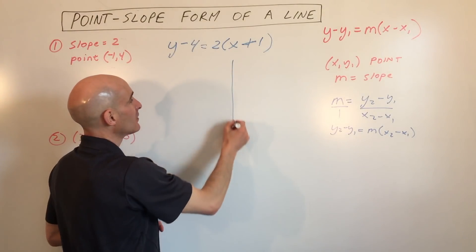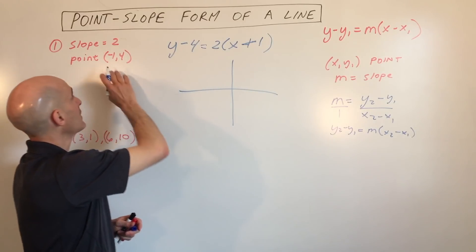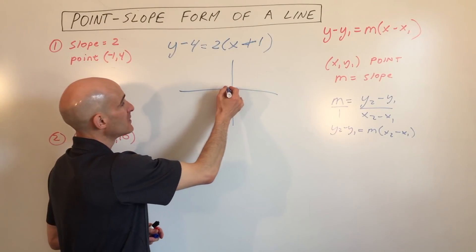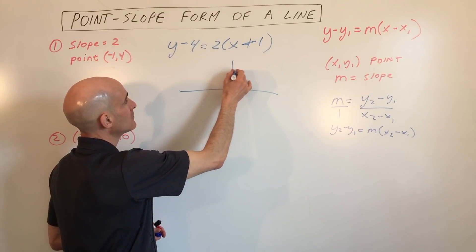Now if we wanted to graph this line, all we would have to do is say it goes through the point negative 1, 4. So negative 1, 4, right there.